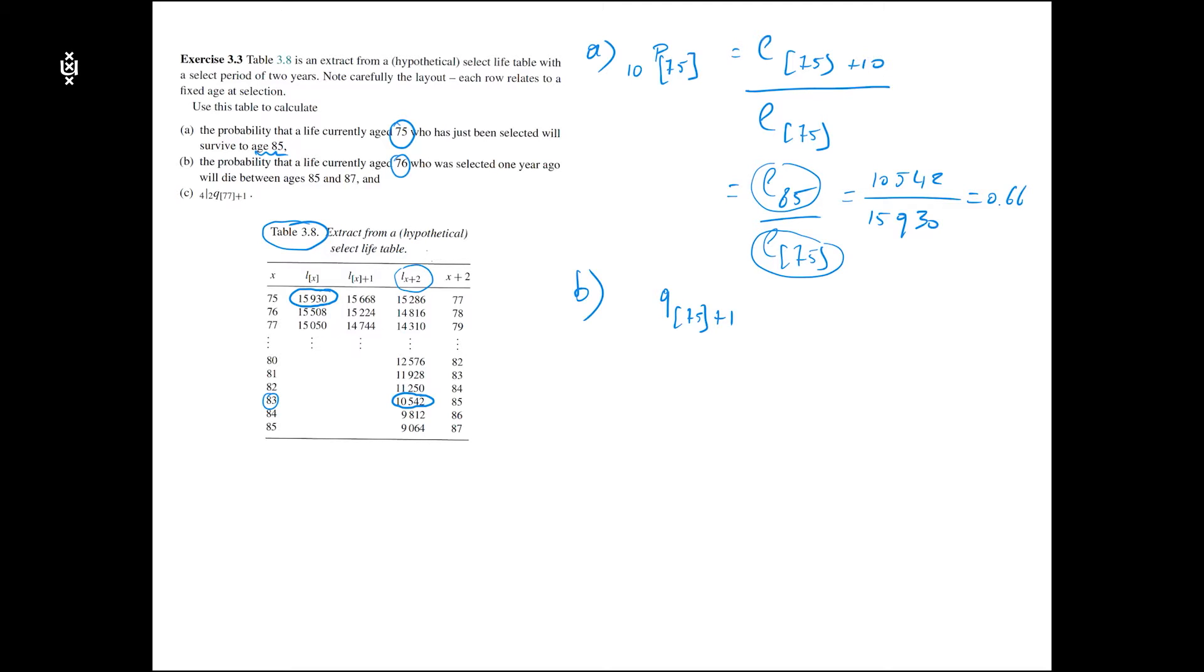This person has to survive until age 85, so for another nine years, and then the life has to die within two years before 87. So it's Q 9 bar 2.